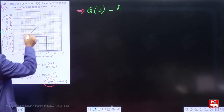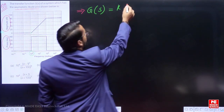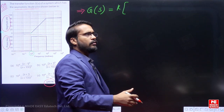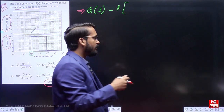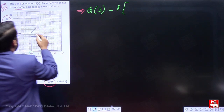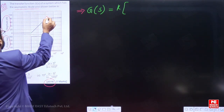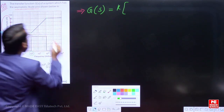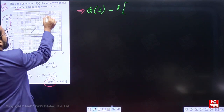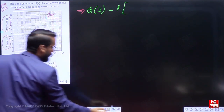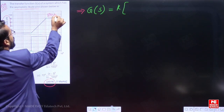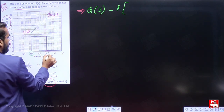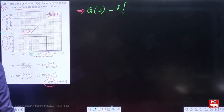After this particular corner frequency — that is nothing but one — there is a positive slope. A positive slope means definitely one zero, or more than one zero, is possible. This is now going to be confirmed through the slope. The magnitude here is 80 dB, and here the magnitude is 0 dB, at frequency 100.